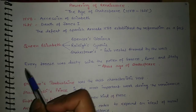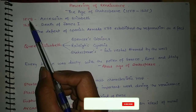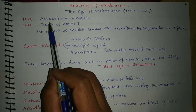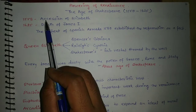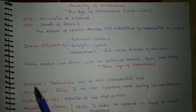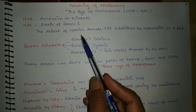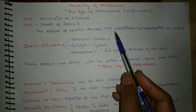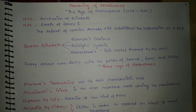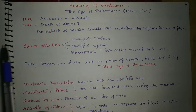Why is 1558 important? It was the year when Elizabeth accessed to the throne, and 1625 is important because of the death of James I. The defeat of the Spanish Armada established the Reformation as a fact in England.